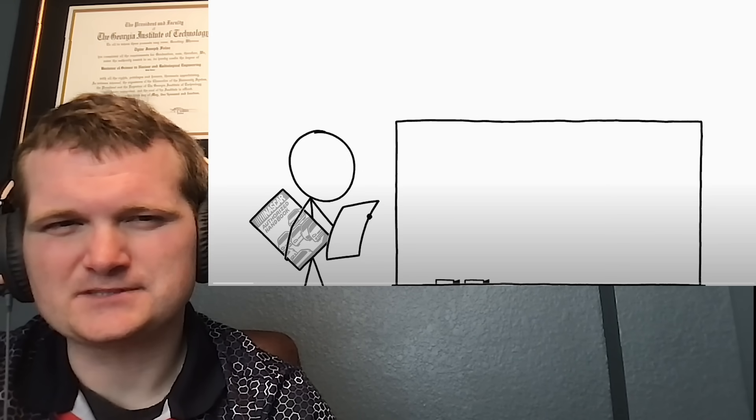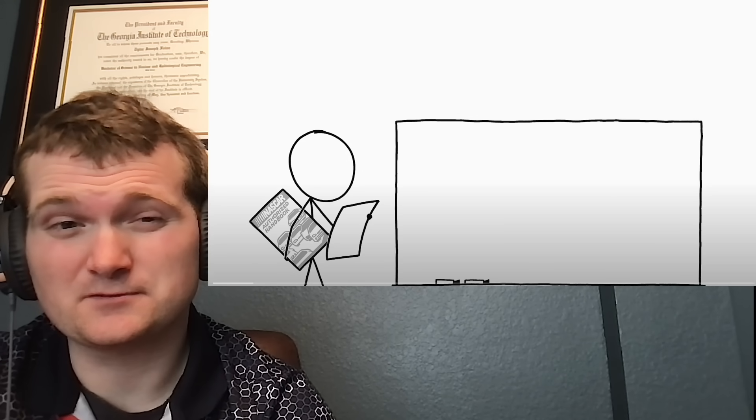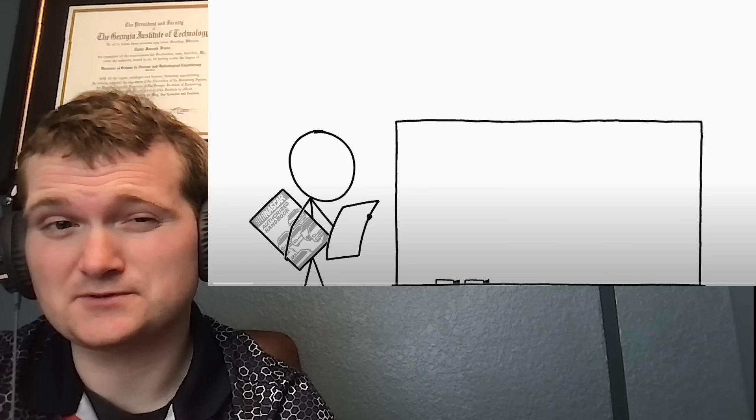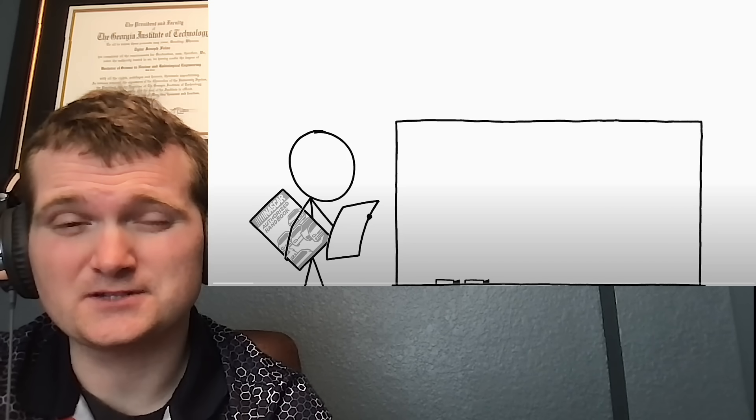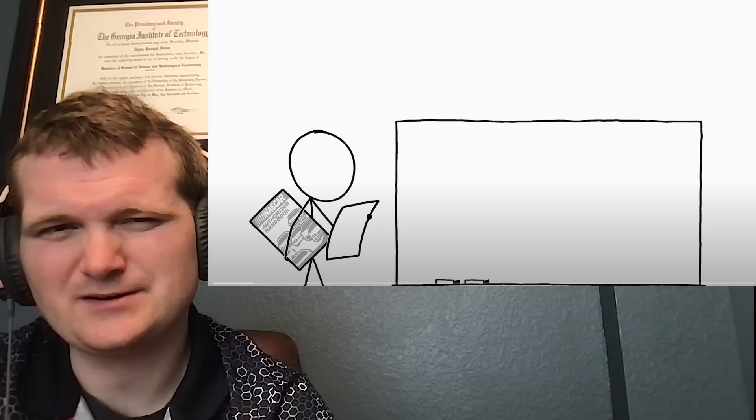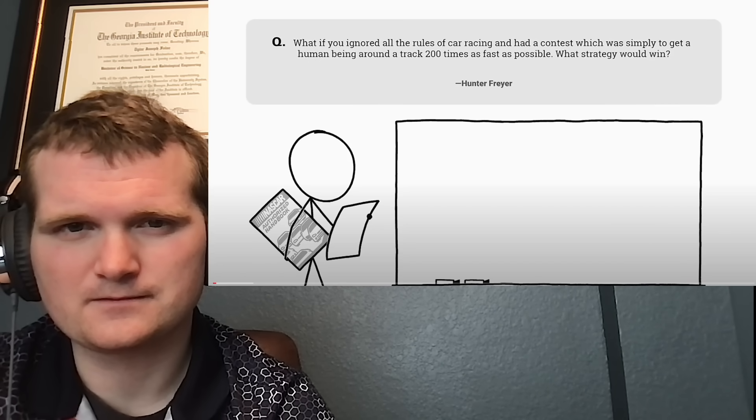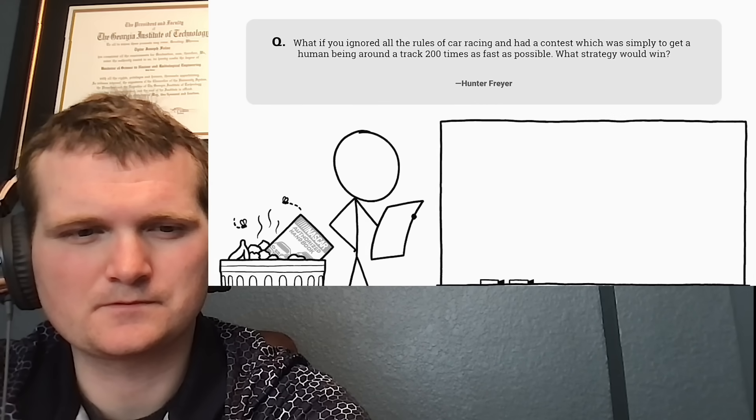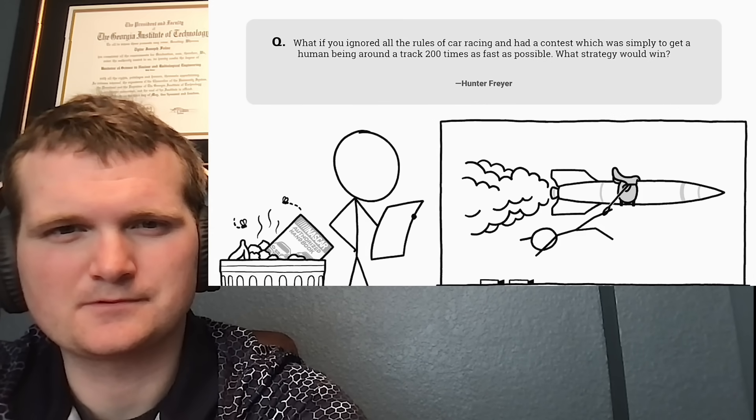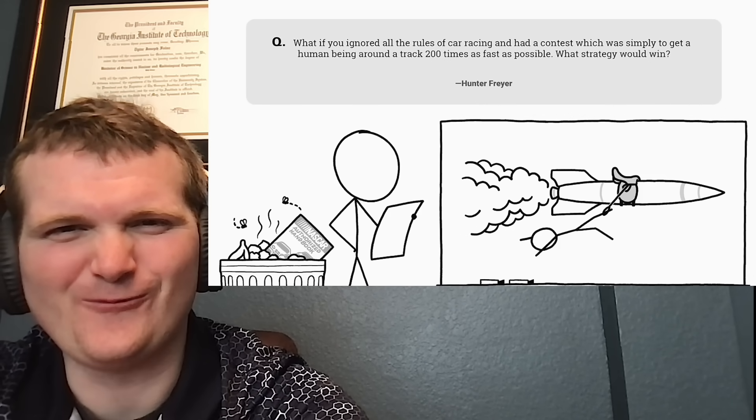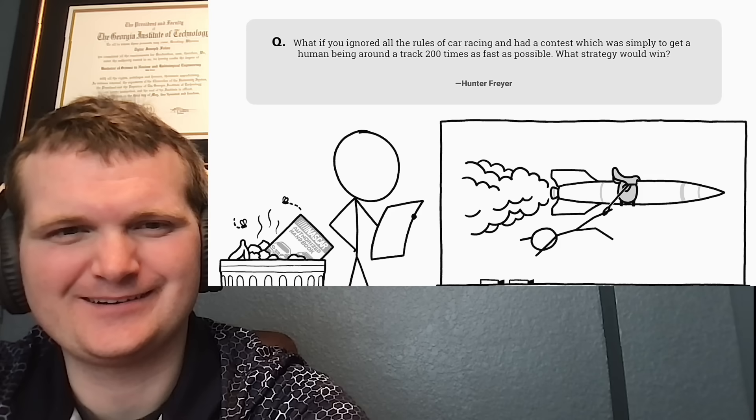Those of you who don't know me, I'm Tyler Fulce. I'm a nuclear engineer with a little over 10 years of experience in the commercial nuclear power industry, from engineering to operations to emergency response. I don't claim to know everything there is nuclear, but I can certainly share some knowledge. This is a question from Hunter, who asks: What if you ignored all the rules of car racing and had a contest which was simply to get a human being around a track 200 times as fast as possible? What strategy would win?